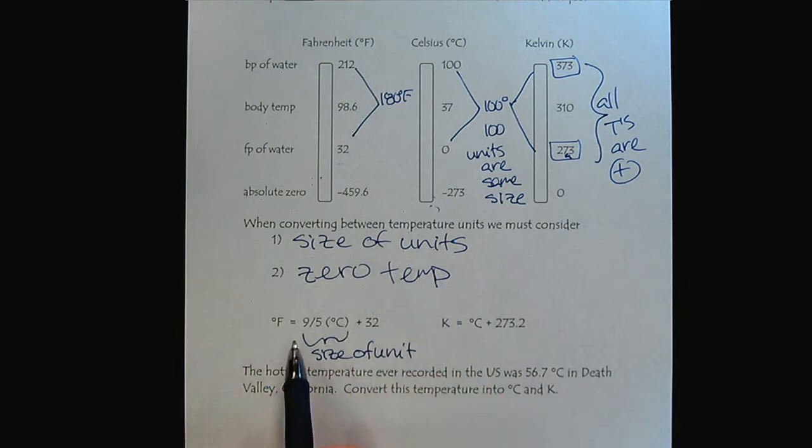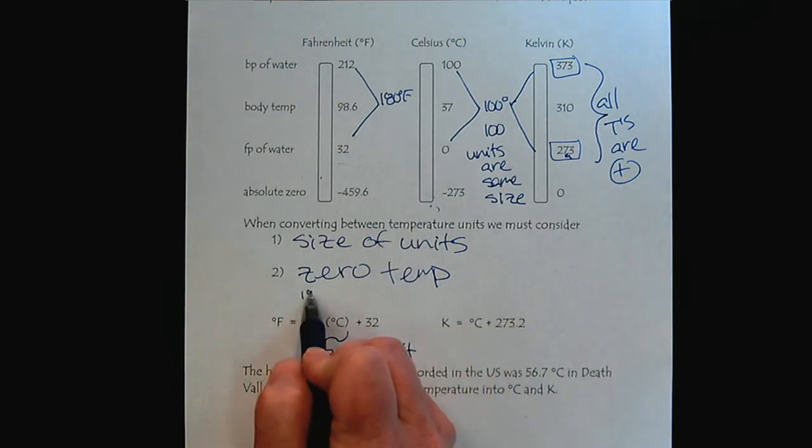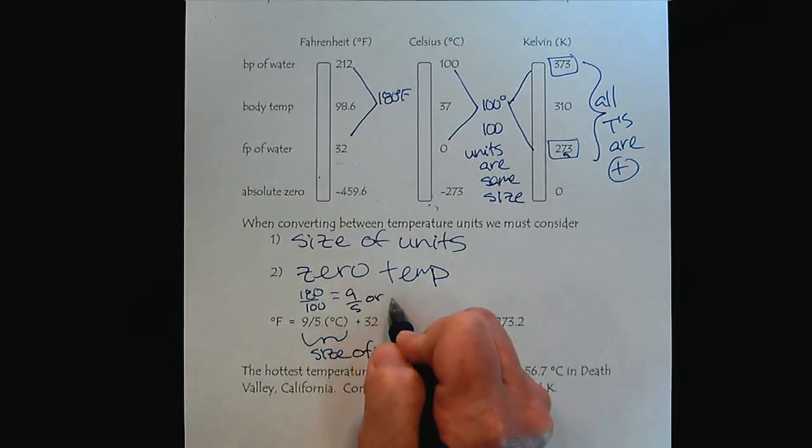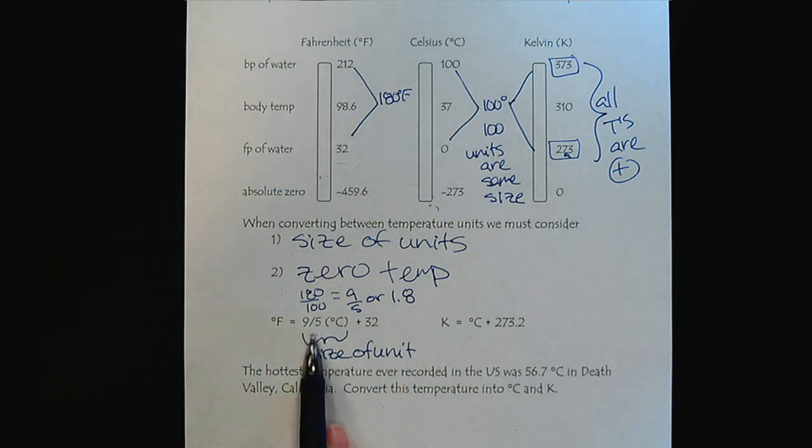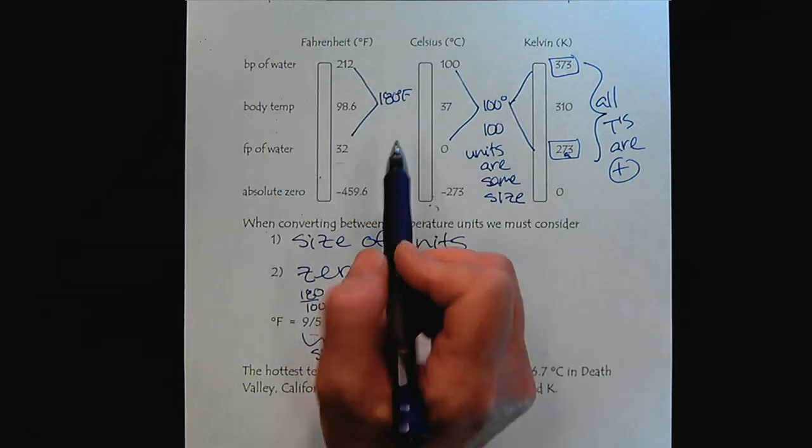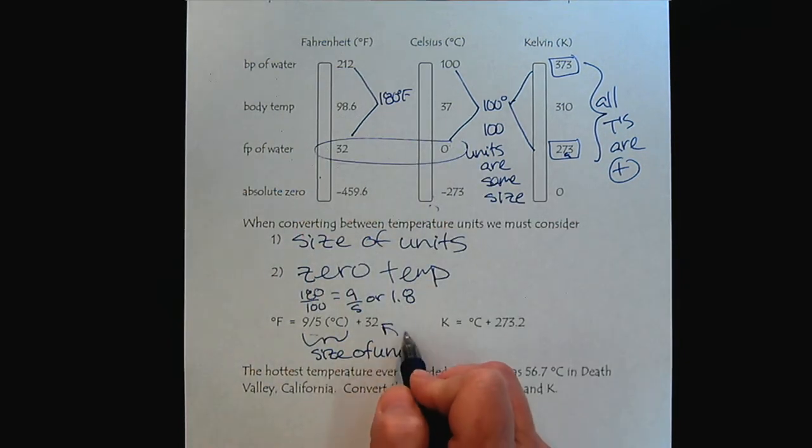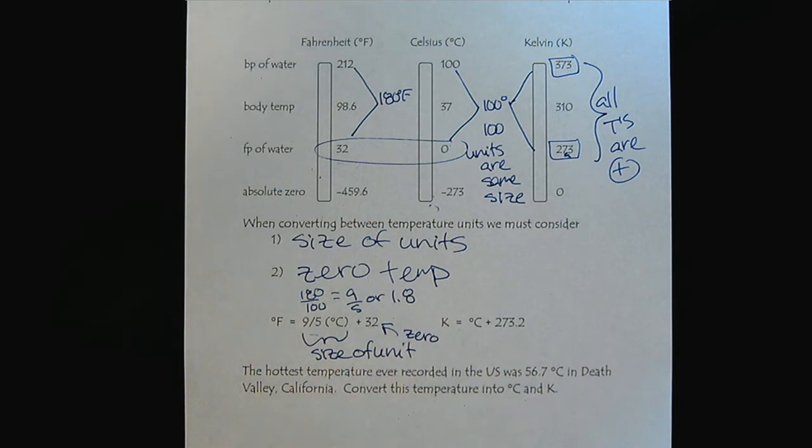If we take 180 divided by 100, that reduces to 9/5, or 1.8. So this first term in our calculation adjusts for the different size of units between Celsius and Fahrenheit. Then the plus 32 is how we adjust for the differences in the zero.